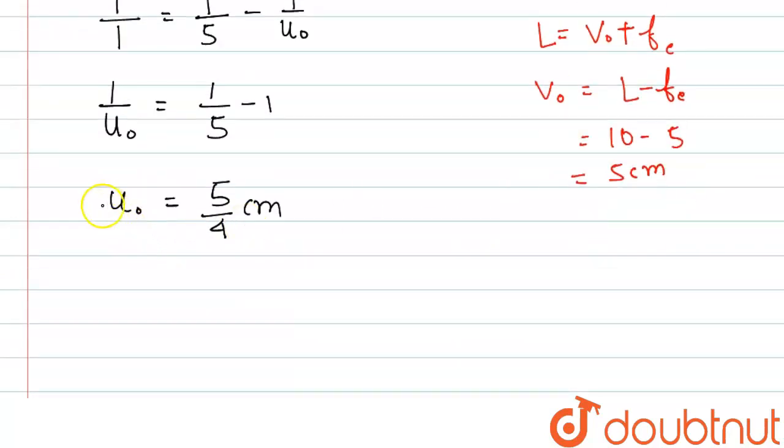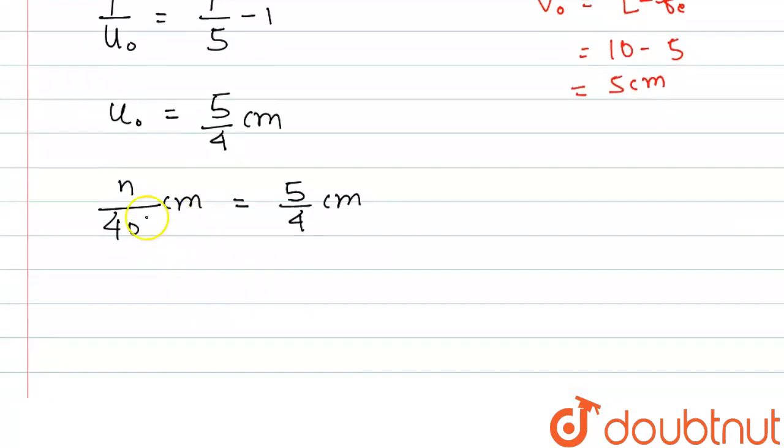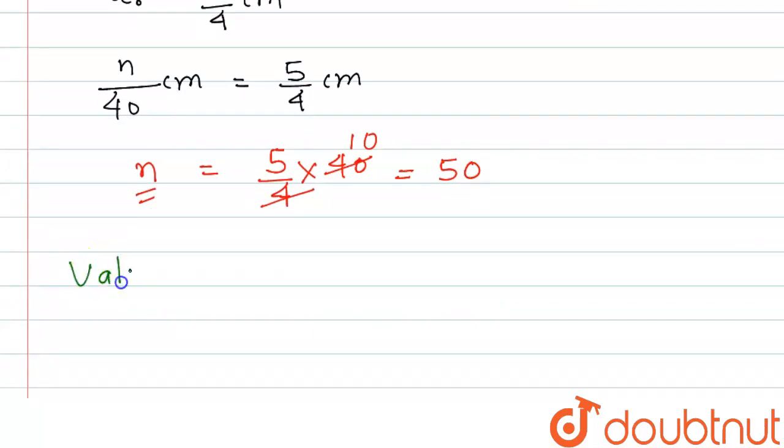Now in the question UO is given as n by 40 cm and here it is 5 by 4 cm. So if we write for n we can write n equal to 5 by 4 into 40. Here 4 cancels the 40 and it will be 10, and 5 multiply by 10 that is 50. So the value of n is 50.